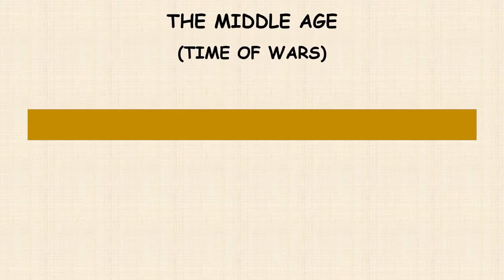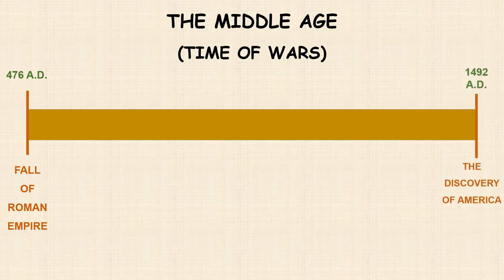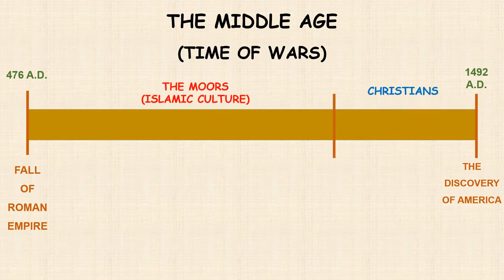The Middle Age was a time of wars. This period began in 476 AD with the fall of the Roman Empire, and finished in 1492 with the discovery of America. In the Iberian Peninsula lived different civilizations. The two main civilizations were the Moors, who brought us Islamic culture, and Christians.